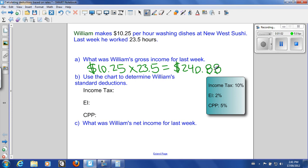B, use the chart to determine William's standard deductions. So in another video I show you how to use a different type of chart and that's what you're gonna be doing in your provincial exam, but in your workbook you have a lot of questions like this where they actually give you a percent. So here we're going to be taking a percentage of that gross income and we're going to be taking that off of the paycheck for our net income. So here you can see we have 10% for income tax, 2% for EI and 5% for CPP.